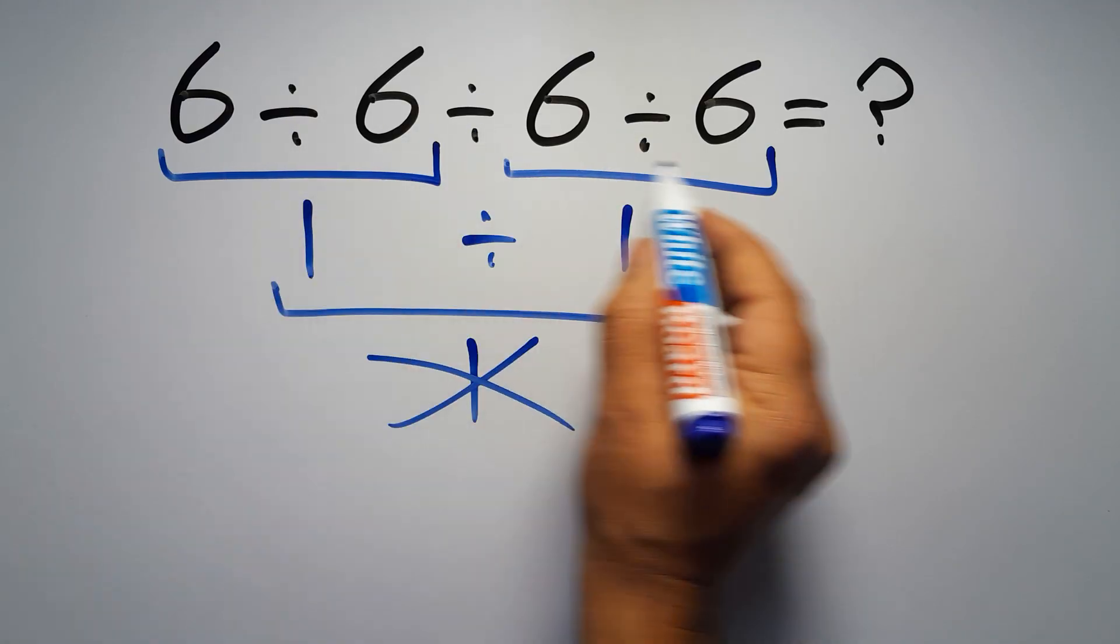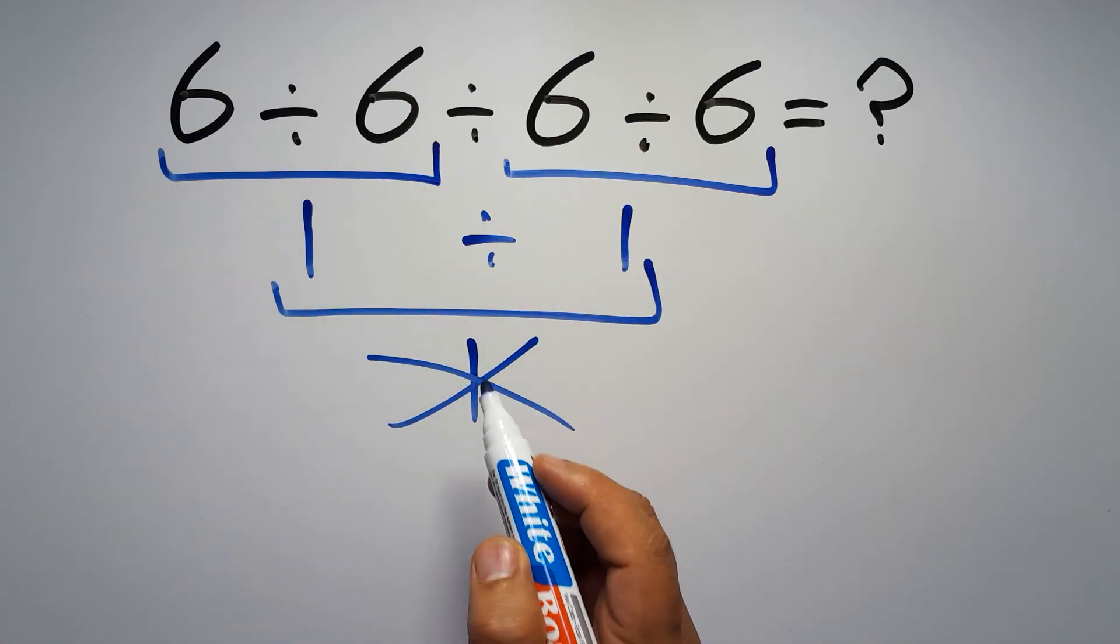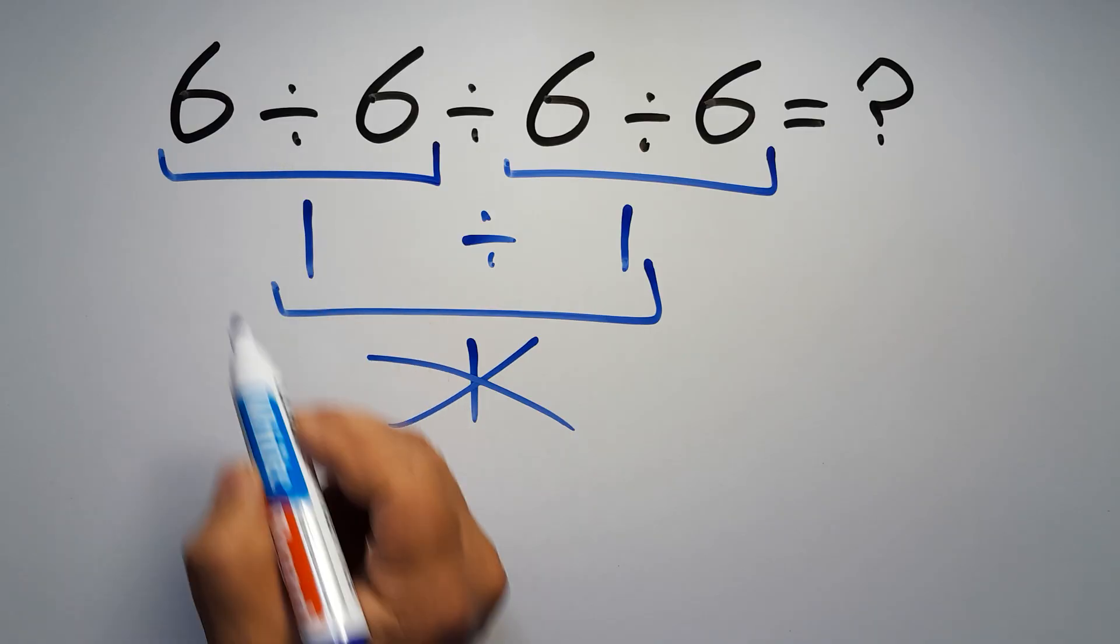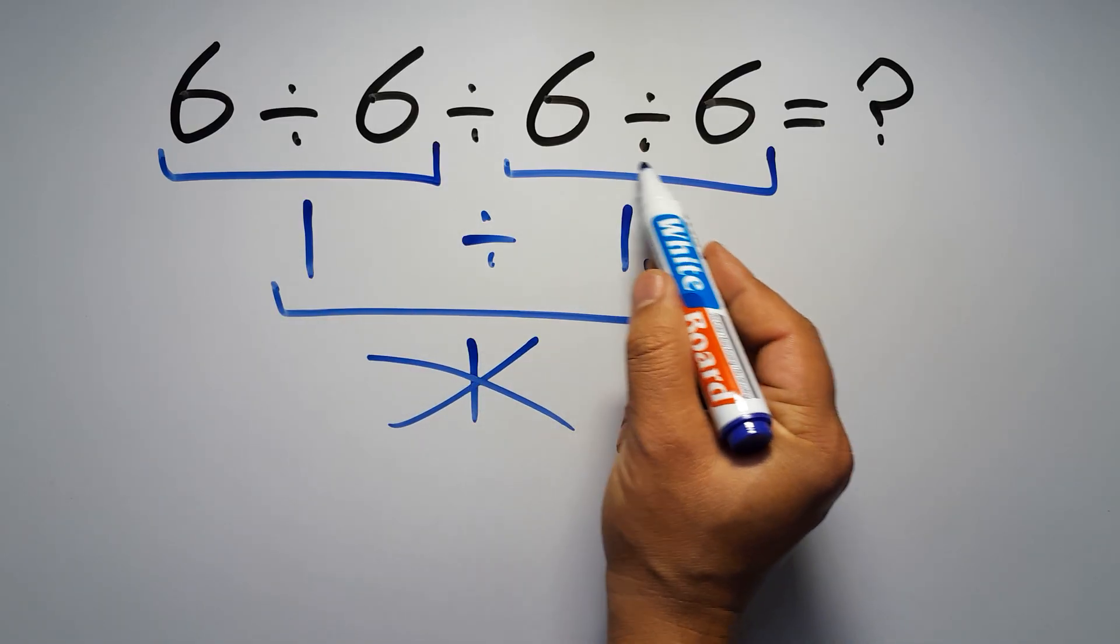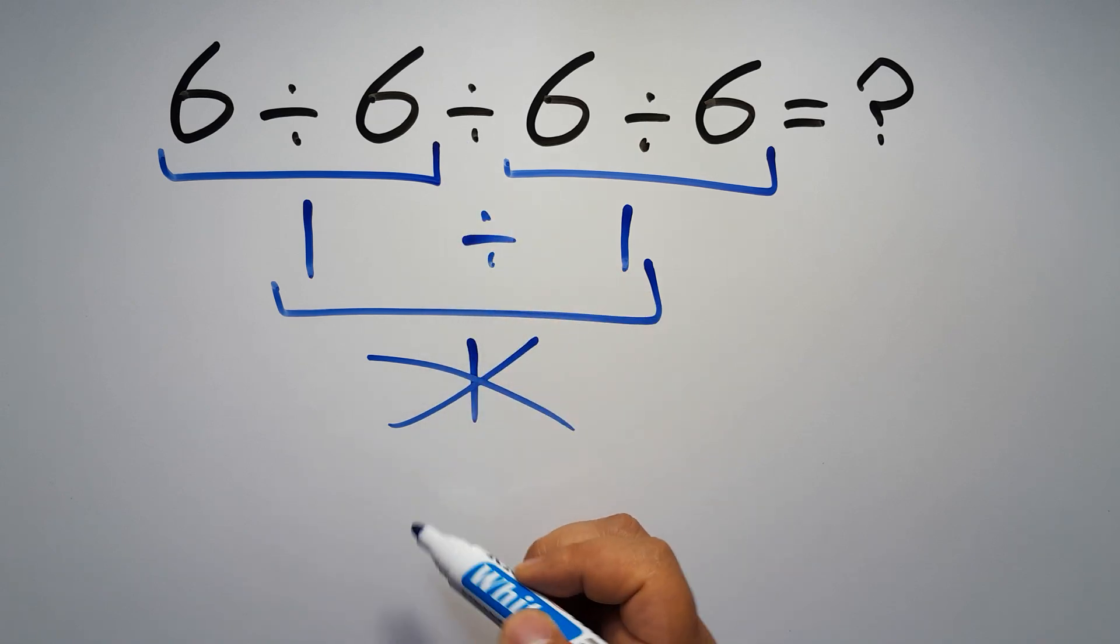So here, first we have to do this division, then this division, and finally this division. If we do this division before this division, it is wrong. So first, this division: 6 divided by 6 is just 1, so we have 1 divided by 6, and again divided by 6.